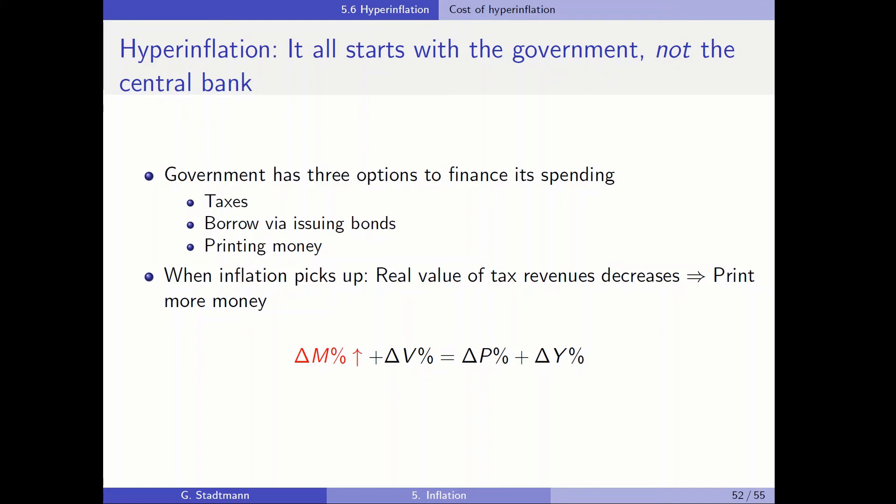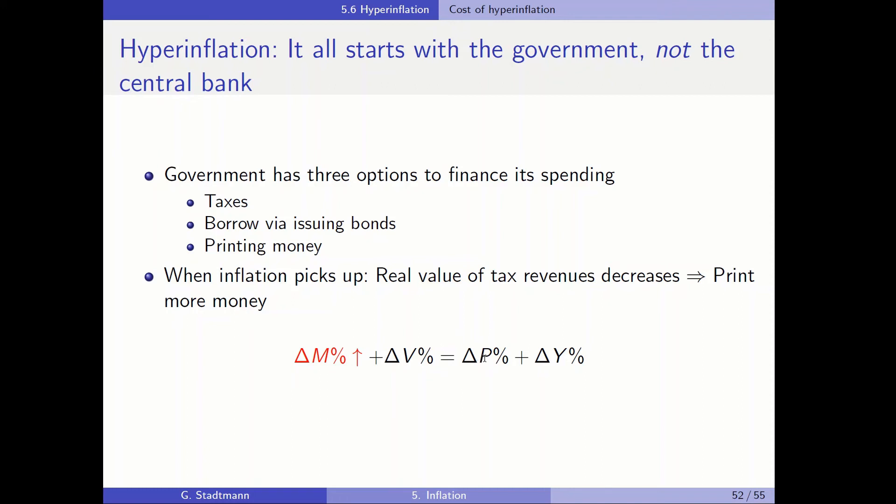Afterwards, the real value of the tax revenues will decrease and the government will print more money. When the government prints money, it is the case that this variable is affected and it will lead to an increase in prices. The velocity of money will be affected.